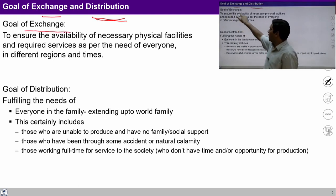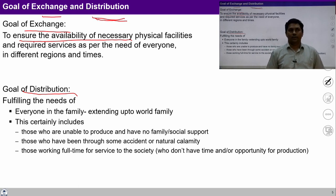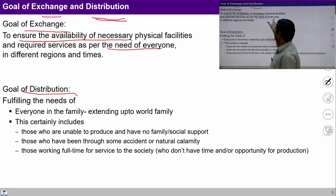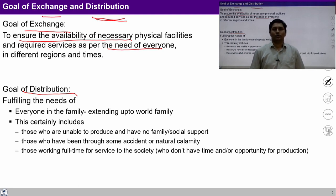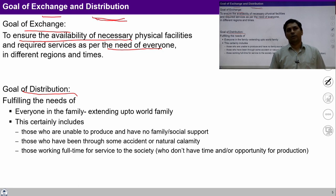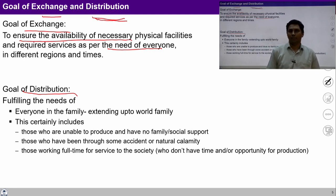We are distributing for social welfare and for running the system smoothly. The goal of exchange is to ensure the availability of necessary physical facilities and required services as per the need of everyone in different regions and times. Basically, exchange is required to fulfill the required physical facilities in the society, as there are many kinds of needs and every need we cannot produce ourselves, so there is a need for exchange so that everyone's needs can be fulfilled.